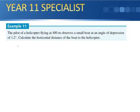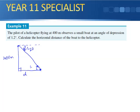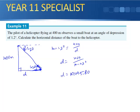Example 11: a polar helicopter flying at 400 meters observes a small boat at an angle of depression of 1.2 degrees. Calculate the horizontal distance of the boat from the helicopter. The angle of depression equals the angle of elevation, so we have tan(1.2°) = 400/d, therefore d = 400 / tan(1.2°), which gives d = 19,096 meters.